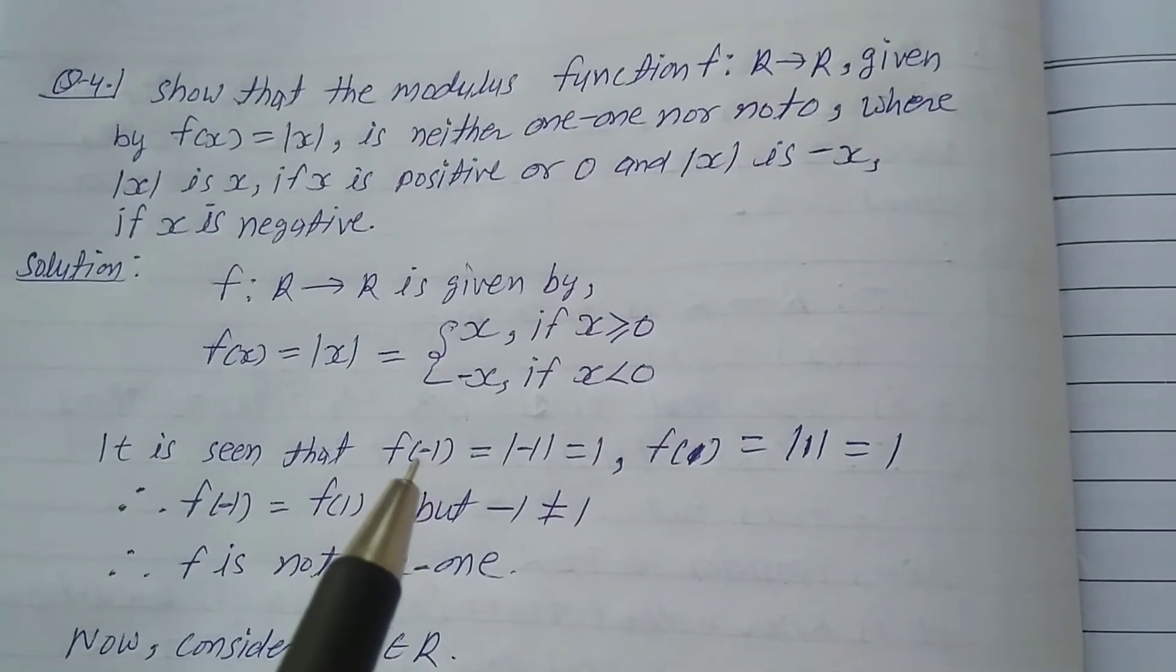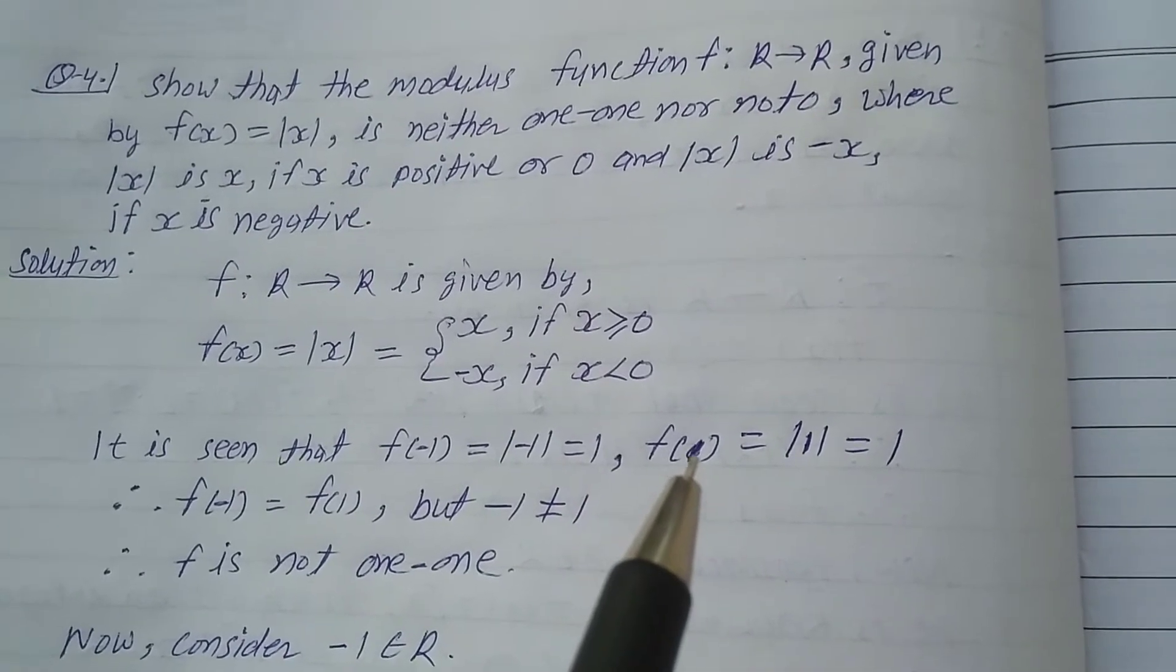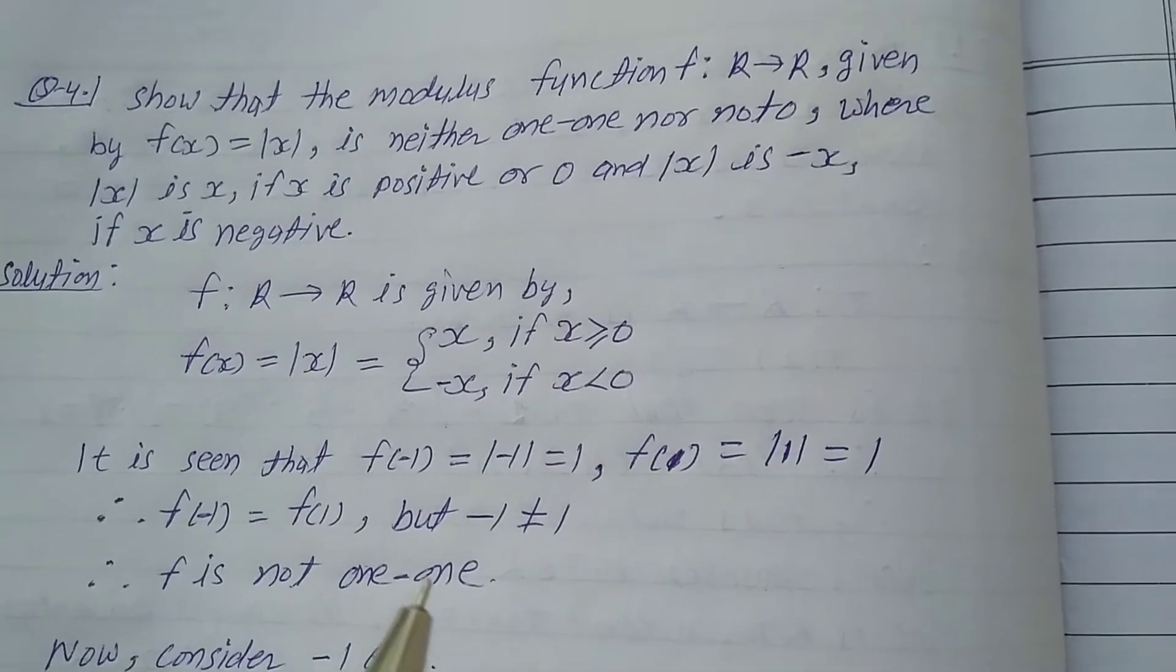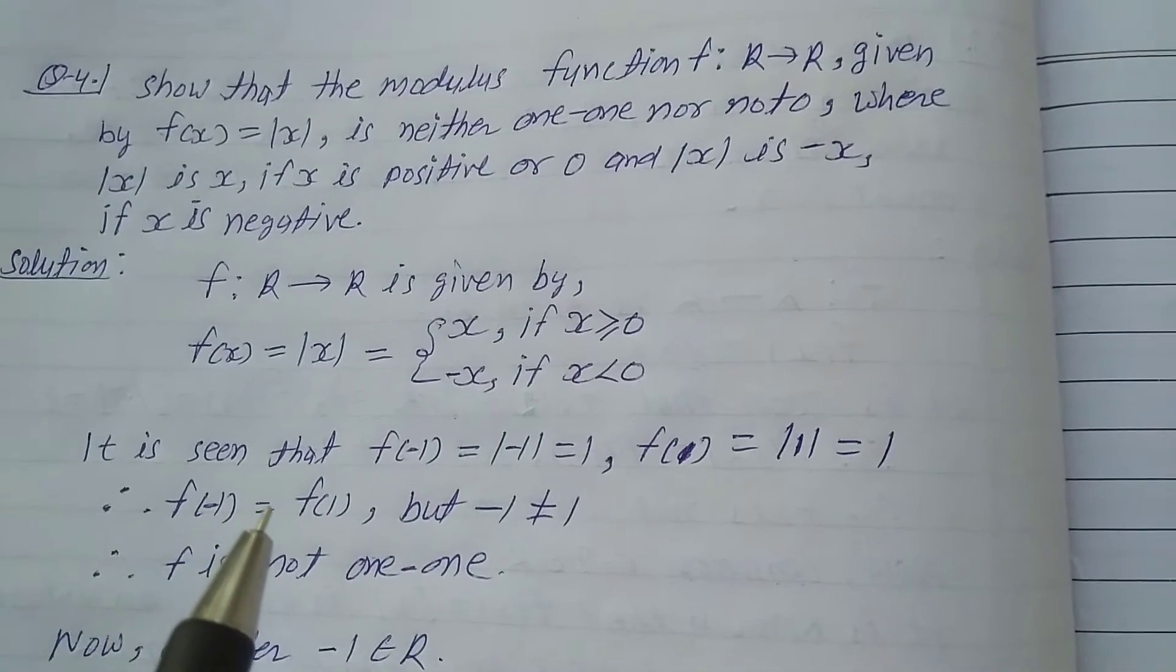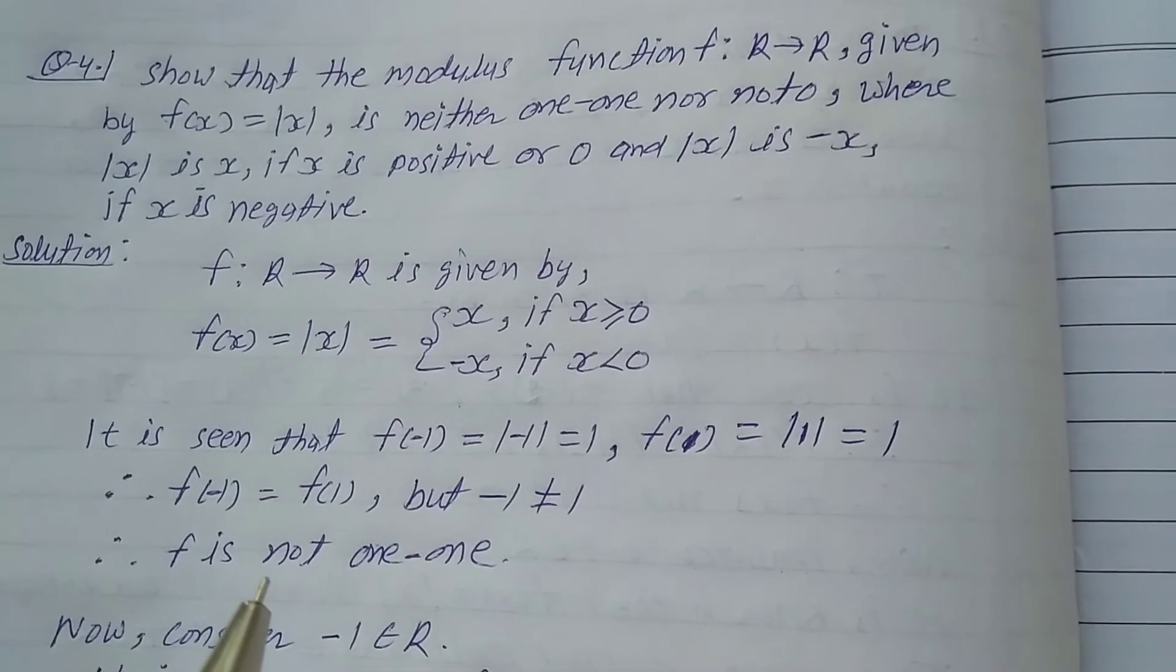It is seen that f(-1) = |-1| = 1, and f(1) = |1| = 1. Therefore f(-1) = f(1), but -1 ≠ 1. Therefore f is not one-one.